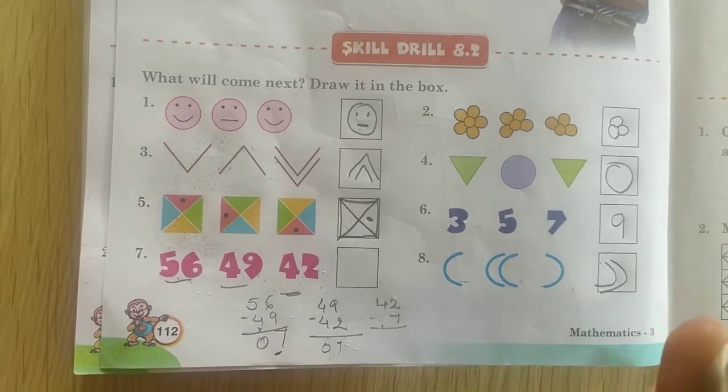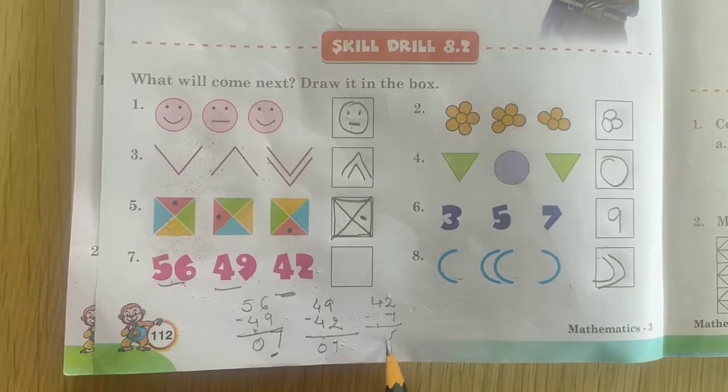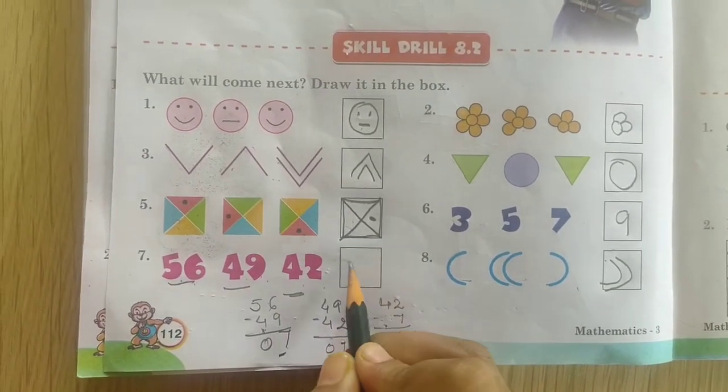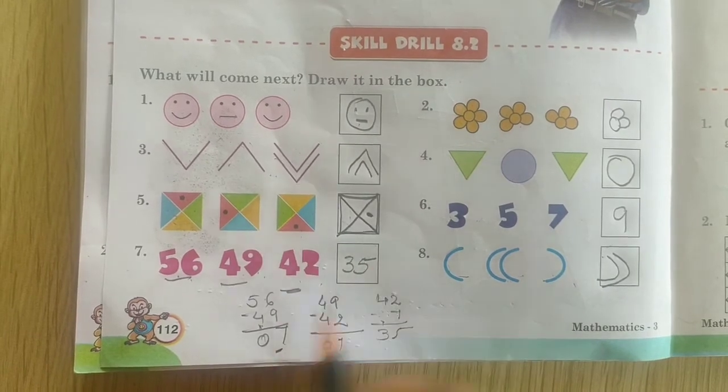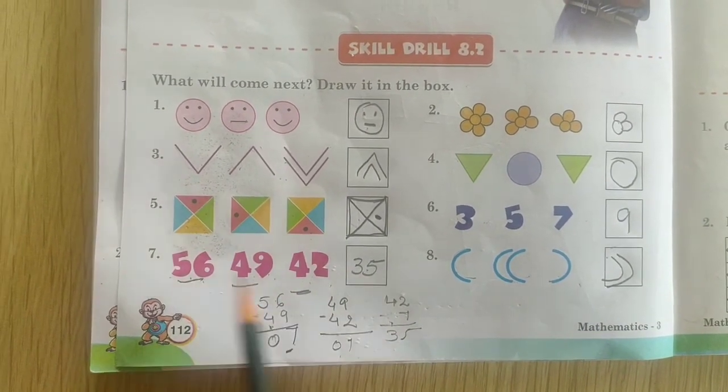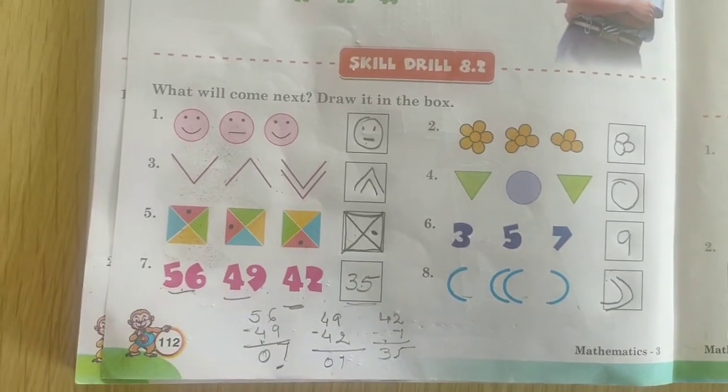So what will come? 2, 3, 4, 5, 6, 7, 5. 4 minus 1 is 35. What will come? 35. Are you getting all the difference of this is 7. So the pattern will be completed.